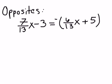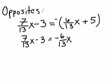And then we'll solve this equation. So to solve this equation, first thing we'll go ahead and distribute that negative. So we've got 7 thirteenths x minus 3 is equal to negative 6 thirteenths x minus 5.